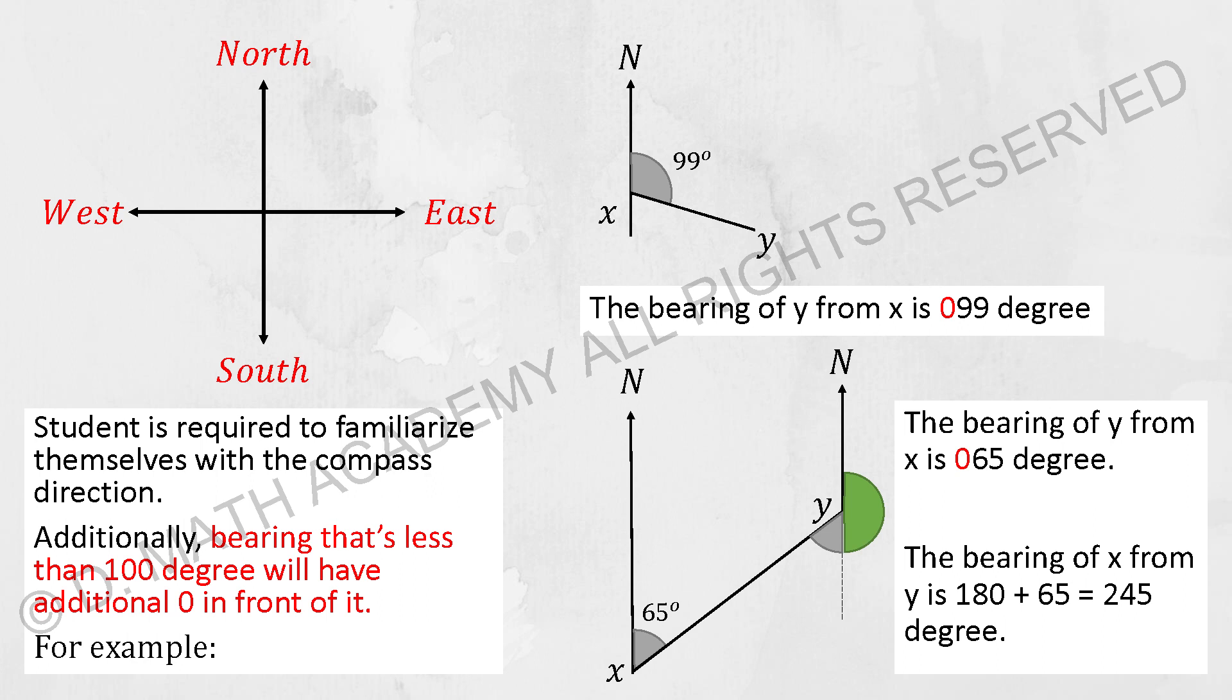The bearing of Y from X will be 099 degree. Whereby for the next question, the bearing of Y from X will be 065 and the bearing of X from Y will be 180 plus 65 which is 245.